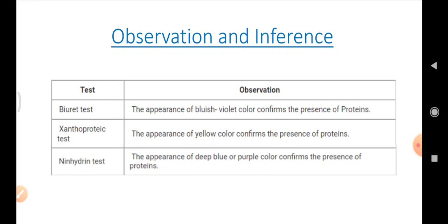And by all these observations, what inference you can get? If in the biuret test, if the appearance of bluish-violet color confirms, then the inference is the presence of protein.